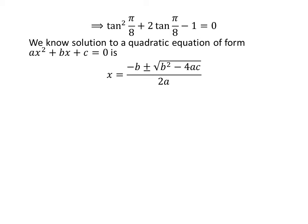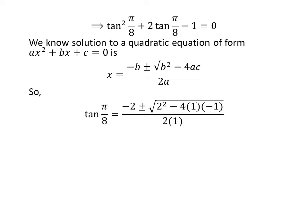The above equation is in the form of a quadratic equation of tangent of pi upon 8. We know the roots of a quadratic equation in general form a times square of x plus b times x plus c is equal to 0 are minus b plus minus square root of square of b minus 4 times a times c upon 2 times a. Comparing our equation with the general form, we get a is equal to 1, b is equal to 2, and c is equal to minus 1. Plugging the values of a, b, and c, we get tangent of pi upon 8 is equal to minus 2 plus minus square root of square of 2 minus 4 times 1 times minus 1 upon 2 times 1.